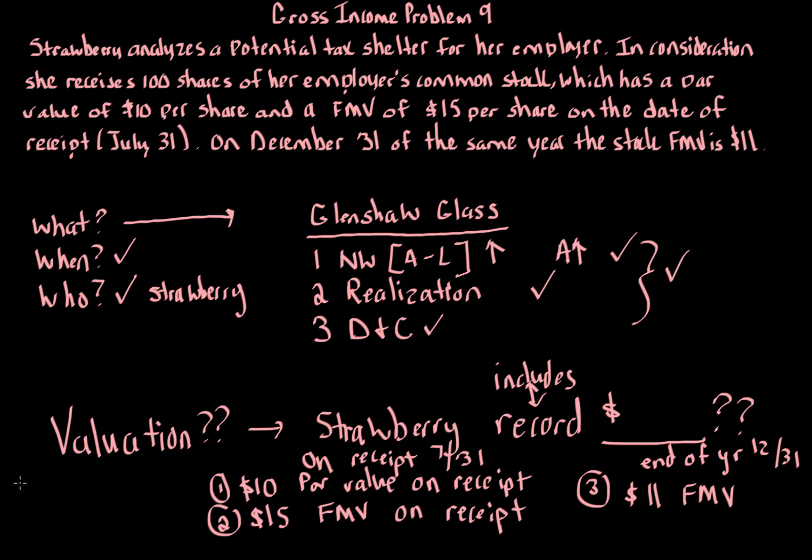When we look at gross income, the regulations under section 61, we use fair market value, which is what a willing buyer and willing seller agree. The key here is that we focus on fair market value. So that eliminates our par value because that is not fair market value. That leaves us with two options: the fair market value on receipt or the fair market value at end of the year.